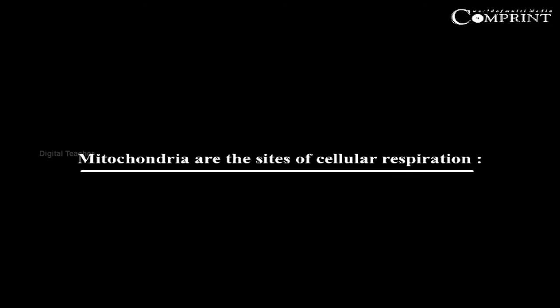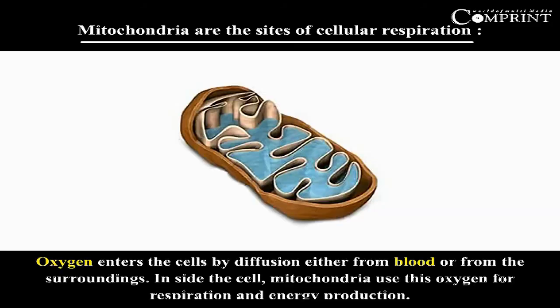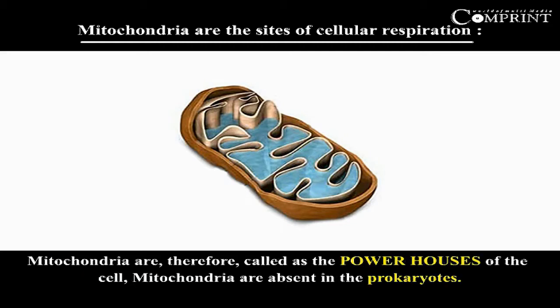Mitochondria are the sites of cellular respiration. Oxygen enters the cells by diffusion, either from blood or from the surroundings. Inside the cell, mitochondria use this oxygen for respiration and energy production. Mitochondria are therefore called the powerhouse of the cell.